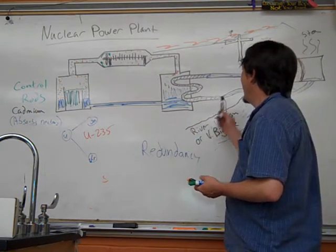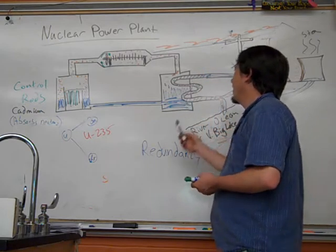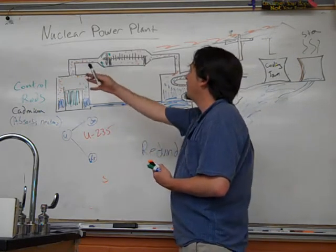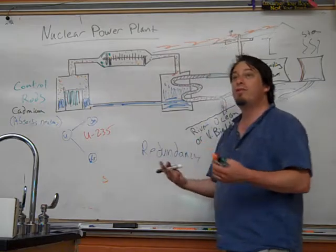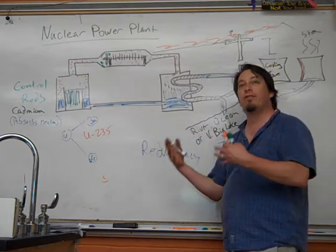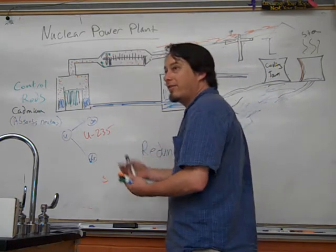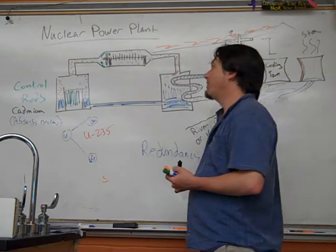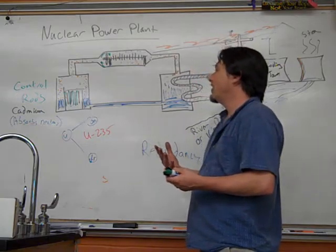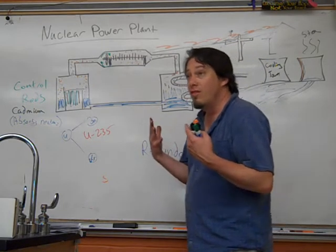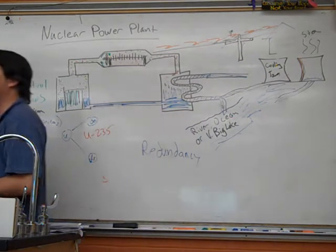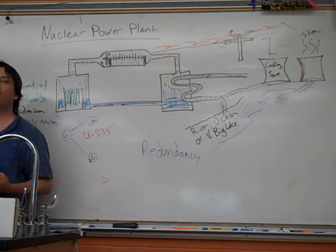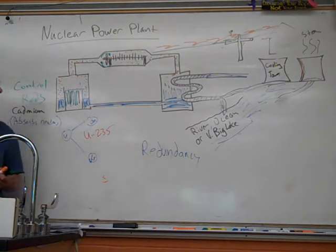But every set of pumps, every set of conduits, every set of electrical cables is redundant, meaning that if one fails, there's another one that automatically kicks into place, because you can't make mistakes when it comes to nuclear power. In fact, whatever your opinions on nuclear power are,